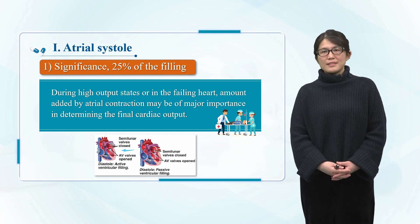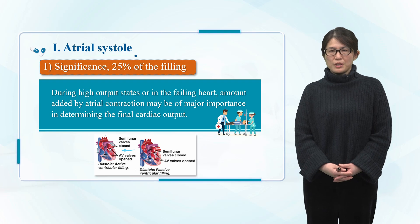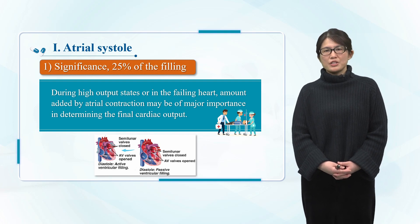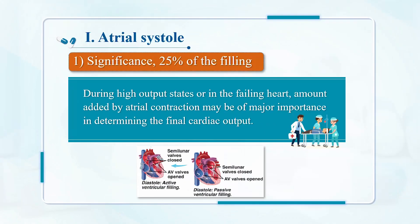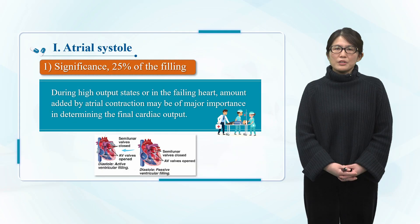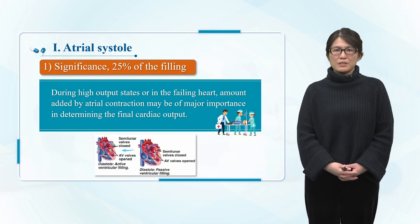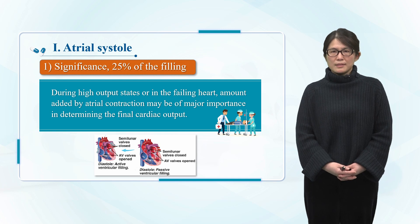In 0.1 second, the blood pumped into the ventricle by atrial contraction usually accounts for about twenty-five percent of the total ventricular volume. The contraction of the atrium can further increase the diastolic volume of the ventricle — that is, the initial length of the ventricular muscle before contraction increases — thus making the contractility of the myocardium increased.